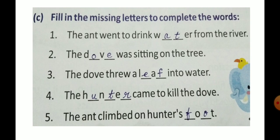Exercise C, fill in the missing letters to complete the words. The ant went to drink dash from the river. Missing letters: A and T. The ant went to drink water from the river.